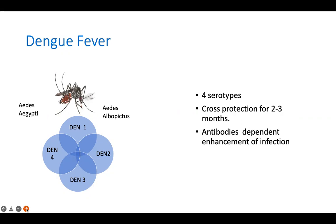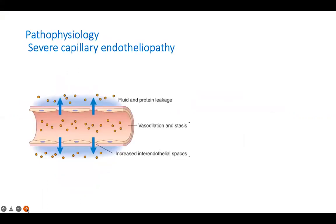During the second or subsequent infection, there is a phenomenon called antibody-dependent enhancement of infection. Instead of the antibodies blocking viral entry, the antibodies actually facilitate the entry of the virus into the body, leading to increased viral load, increased cytokine response, and a worse infection. It is always the secondary dengue infection that is worse than the primary.